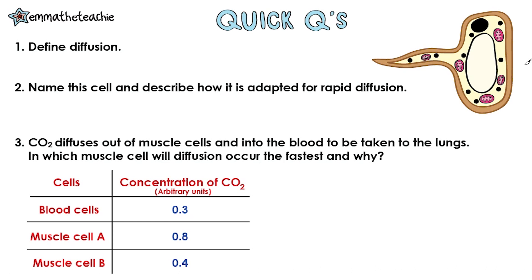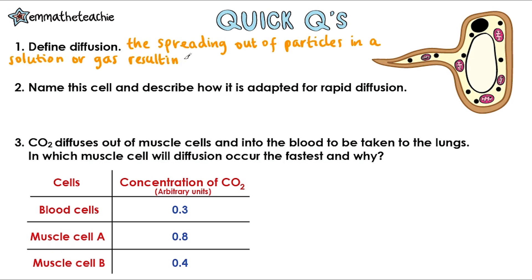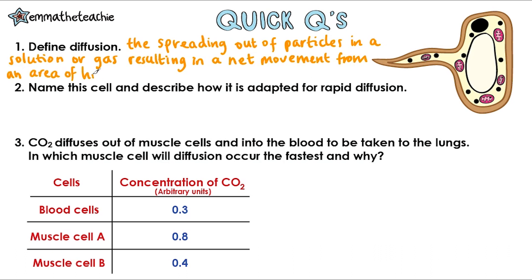Question one: define diffusion. This is the spreading out of particles in a solution or gas, resulting in a net movement from an area of higher concentration to an area of lower concentration — or you can say down a concentration gradient. Make sure you write that word concentration out in full. Question two: name this cell and describe how it is adapted for rapid diffusion.